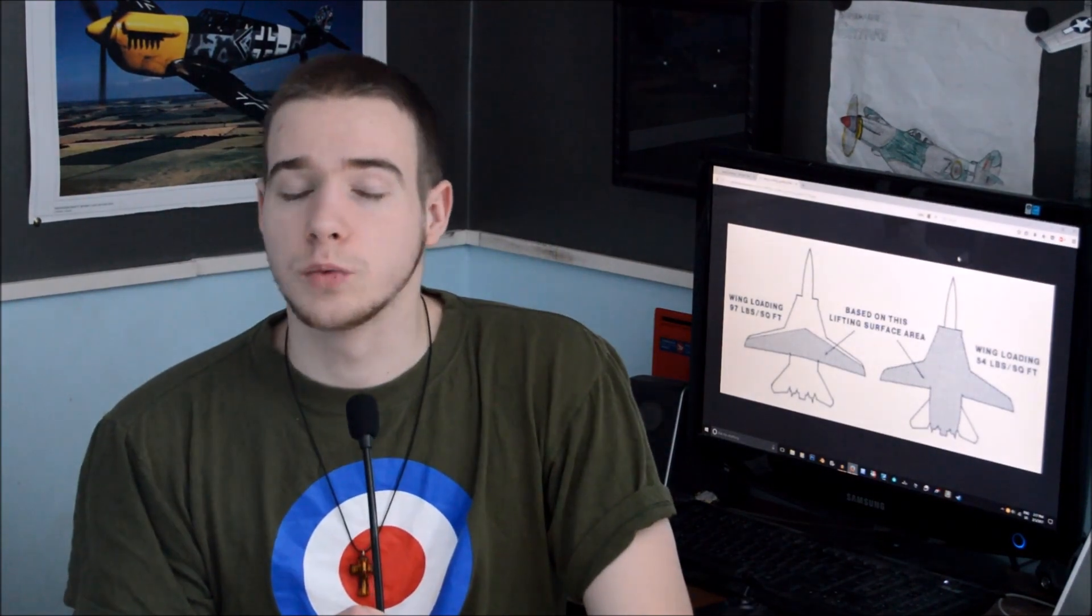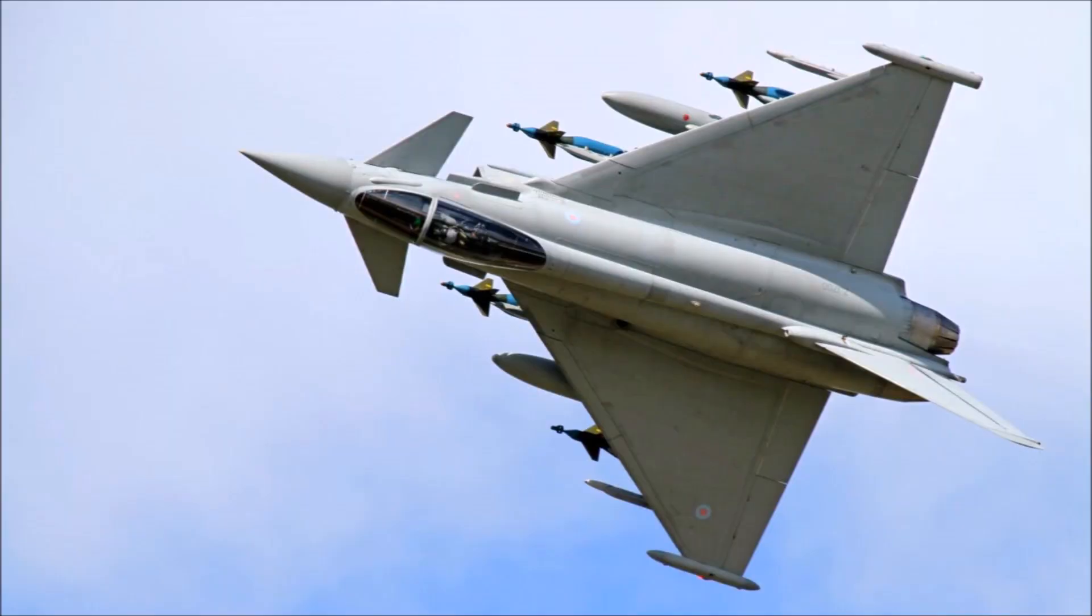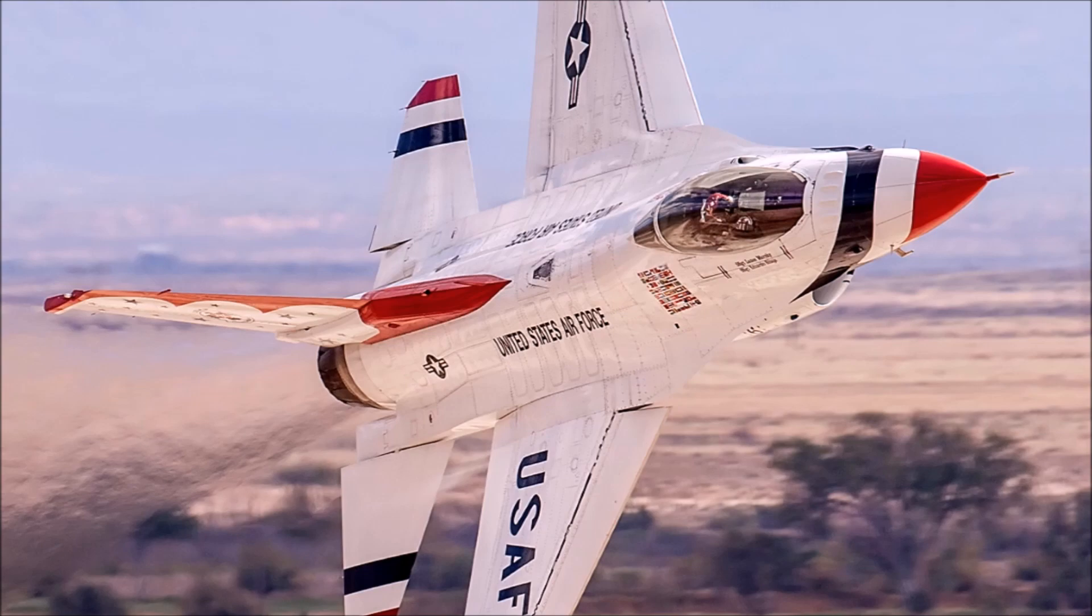This same thing can be seen in aircraft like the F-35 and Harrier. An aircraft with low wing loading would be something with large wings like a Eurofighter Typhoon, or something that's very light, like an F-16.